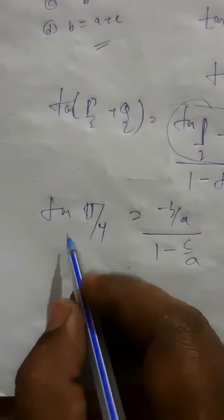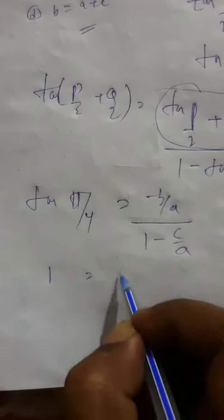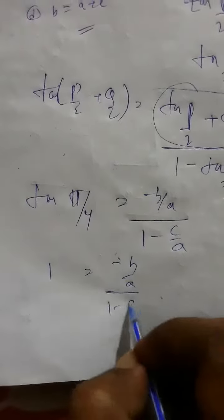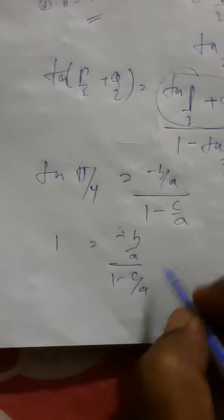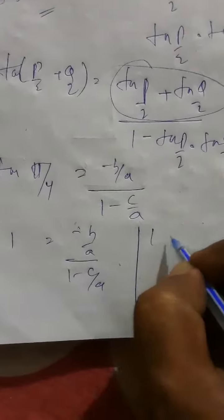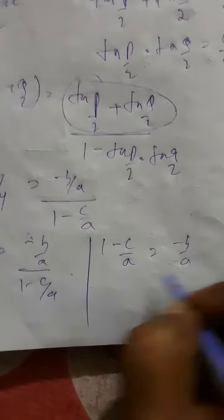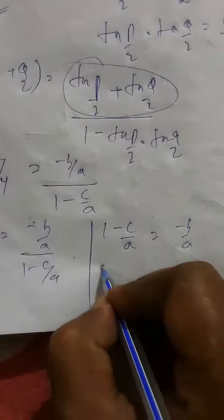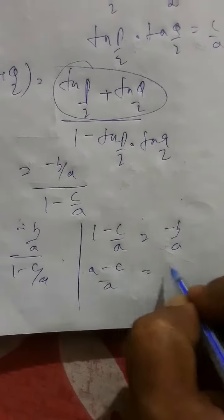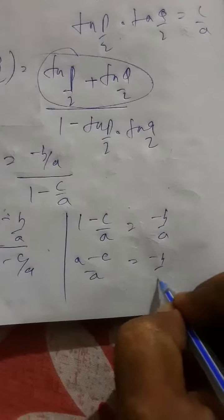Now, tan 45 is 1. So this is minus B by A upon 1 minus C by A. If I cross multiply, this will become 1 minus C by A is equal to minus B by A. Further, if I solve, this will become A minus C by A is equal to minus B by A. I can strike out this A.